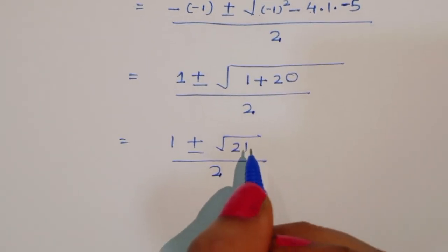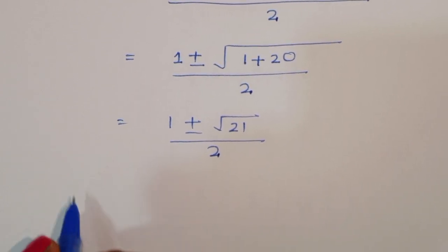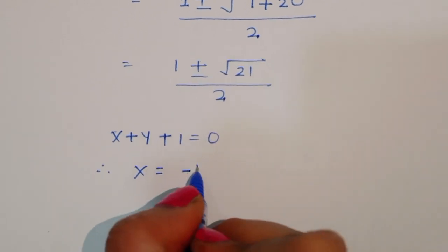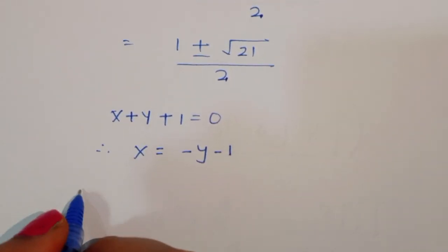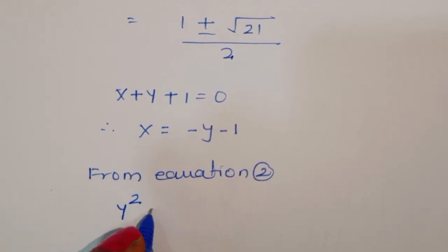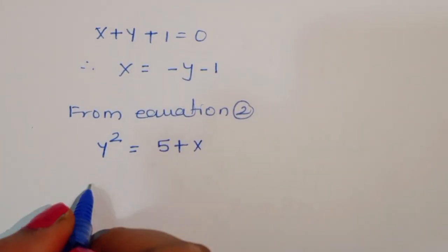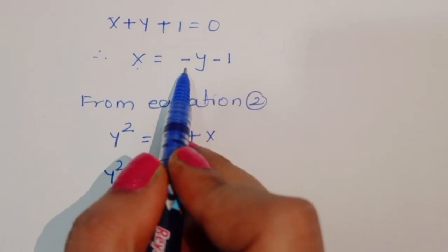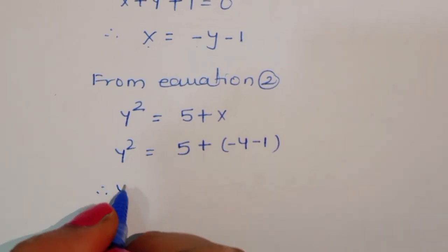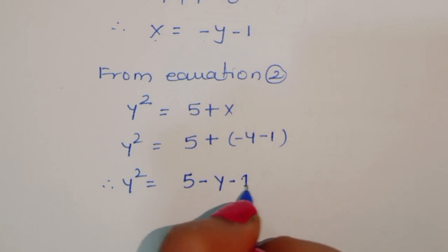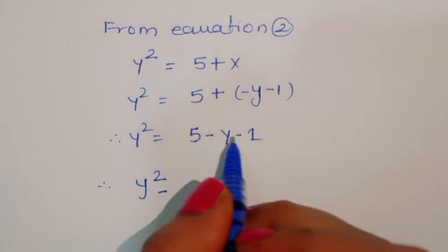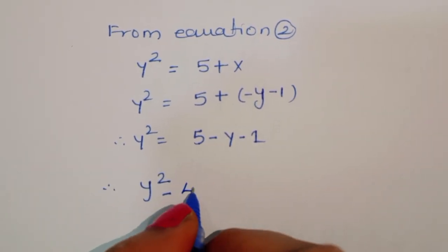From equation x + y + 1 = 0, we get x = -y - 1. Substituting into equation 2, y² = 5 + x = 5 + (-y - 1) = 5 - y - 1 = 4 - y. So y² + y - 4 = 0.